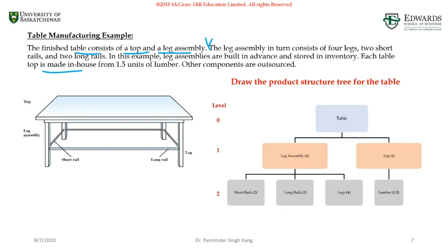So I have the independent demand item, which is a table. It consists of a leg assembly at level one and one top. Further, the leg assembly consists of two short rails, two long rails, and four legs.